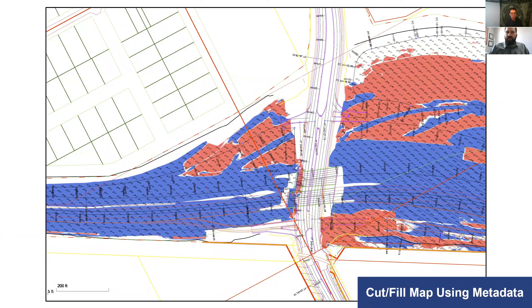Another way we use metadata is for planning. I can take the existing and proposed and run volumes on the whole job. It produces an ISO pack — a difference model. Using the difference model I can shade it based on what is cut and what is fill, print that out, and hang it in our cubes for planning. It helps figure out where the cuts and fills are, why the contractor is doing work a certain way. They can easily show workers where there's zero to 500 of dirt for the dozer versus where they'll be hauling with scrapers. It helps with planning quite a bit.